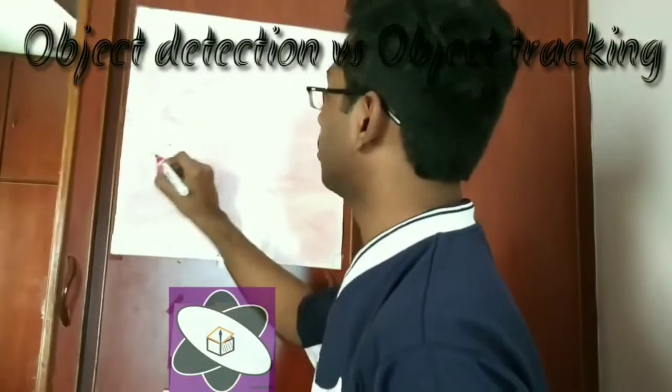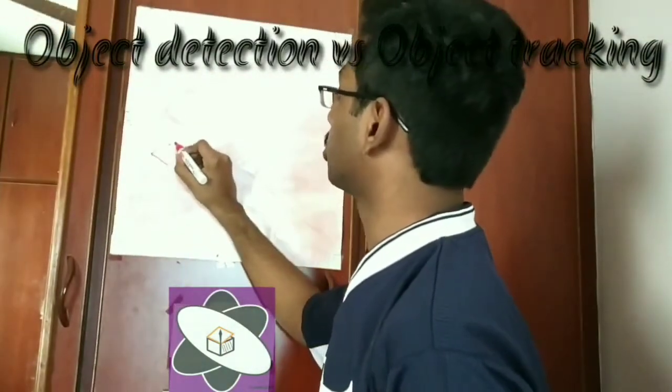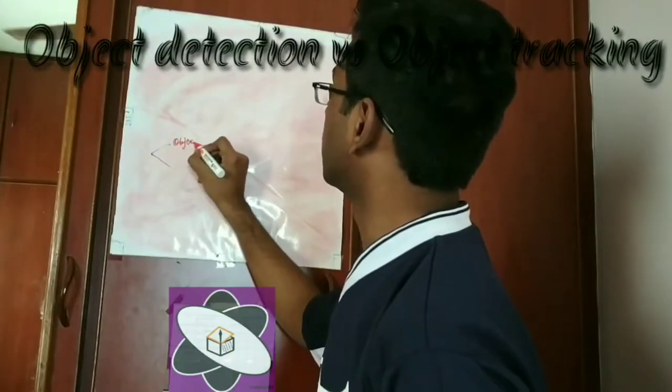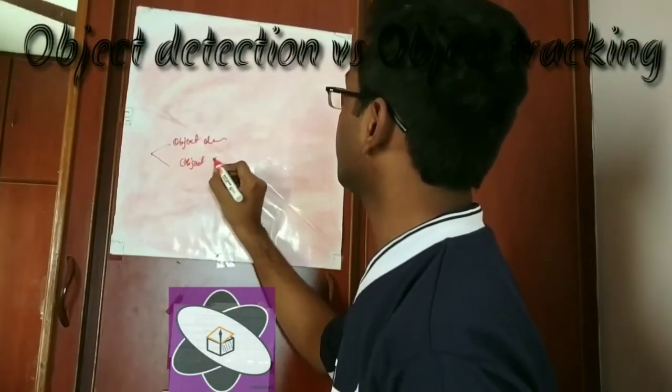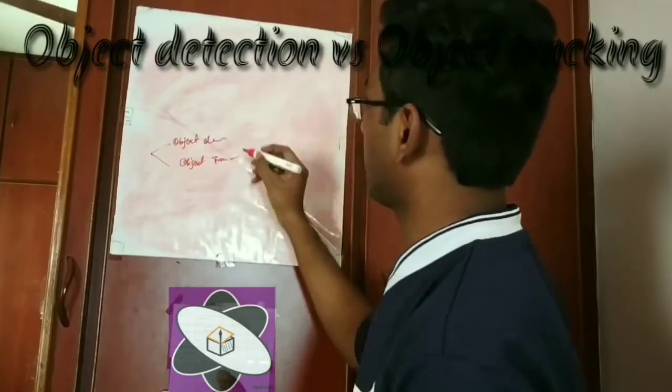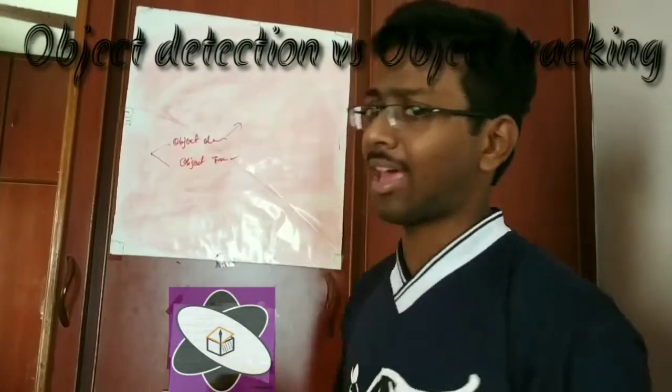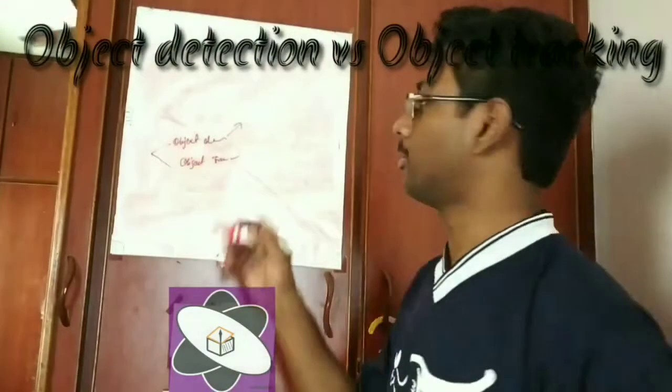So there are two methods: object detection and object tracking. The difference is in object detection, what we will do is actually more or less done for pictures. So if we have a picture frame.